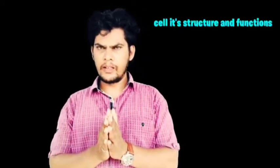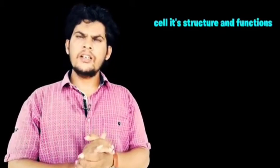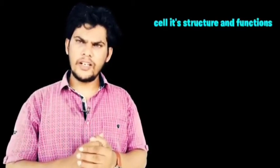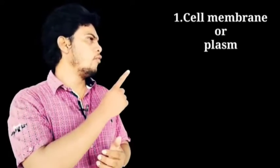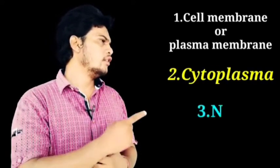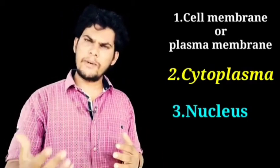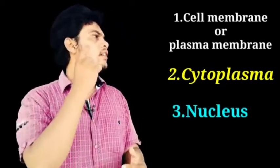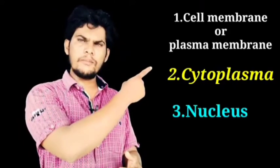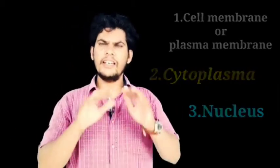Whether it is an animal cell or a plant cell, they contain three major parts. The first one is the cell membrane, also called the plasma membrane. The second is cytoplasm, and the third is the nucleus. These three are the major parts of any cell.